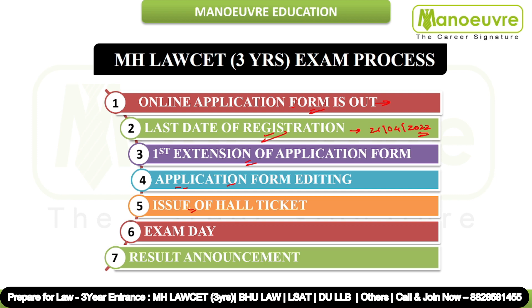The 5th process is the issue of the hall ticket. You will receive the hall ticket mentioning your exam center and what things you need to carry during the CET examination. The 6th process is the exam day — the D day. This is the most important step. After that, the 7th process is result announcement — around 15 to 20 days after the exam, your result will be announced.